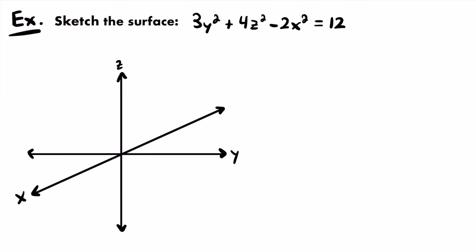For this example, we want to sketch the surface represented by: 3y² + 4z² - 2x² = 12. We need to identify the type of surface. First, we have 3 variables — x, y, and z — and all 3 of them are squared.